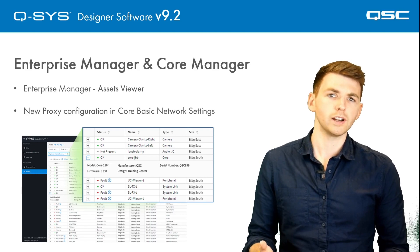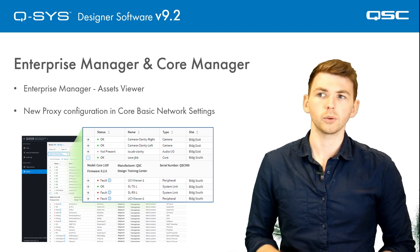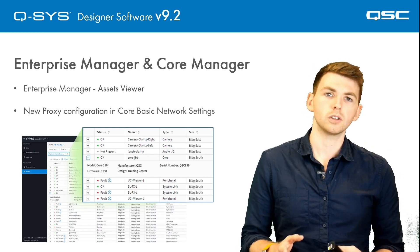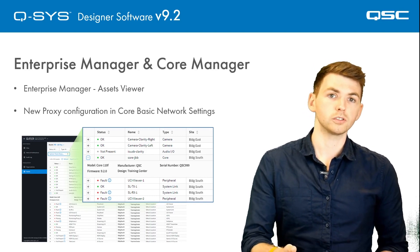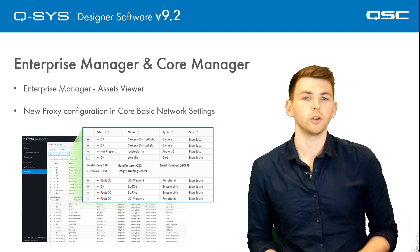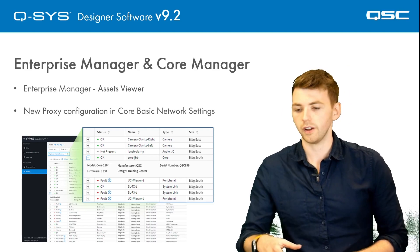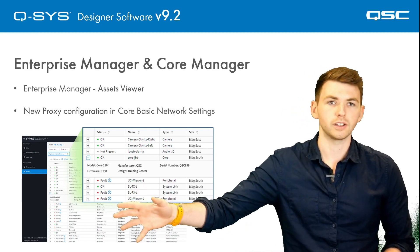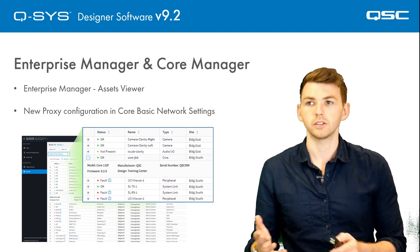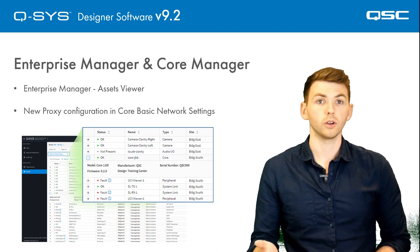You can also export this as a CSV file, which makes it really easy to share with your colleagues and do asset management more generally. We've also added the ability to connect to the internet from a QSYS core via a proxy server. This is important on more security-conscious networks where a device is not simply allowed to go out to the internet and needs to go through a server. You can now do that with QSYS, which means you can use Enterprise Manager on those types of sites.